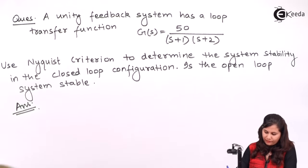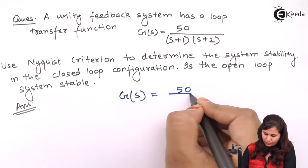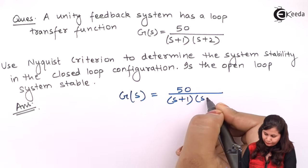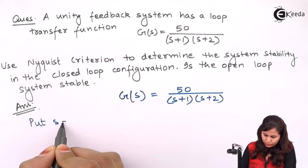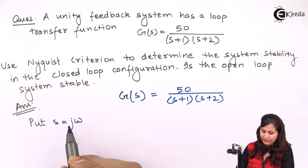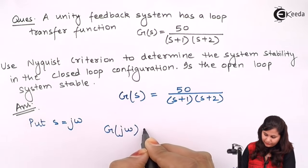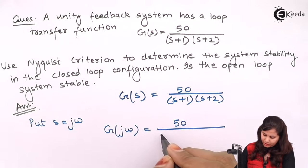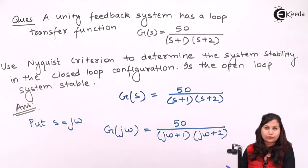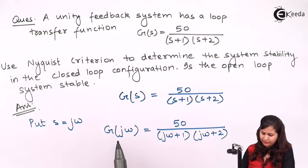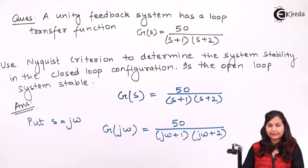We are given the loop transfer function G(s) equals 250 upon (s+1)(s+2). In the first step we will put s equals j-omega, so that we will be able to find out G(j-omega). So G(j-omega) will be equals to 250 upon (j-omega plus 1) and (j-omega plus 2). Now for this G(j-omega), we will write the magnitude and the angle conditions.